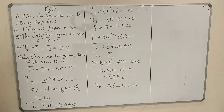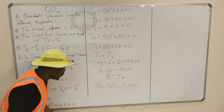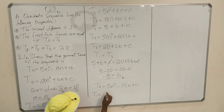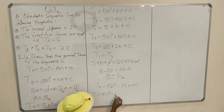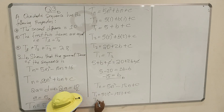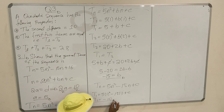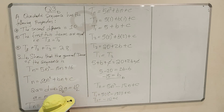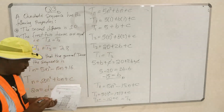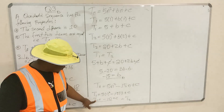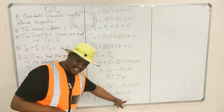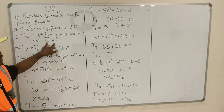What does the next property tell you? T₁ + T₂ + T₃ = 28. We know the first term. T₁ = 5(1)² minus 15(1) + C = 5 minus 15 + C = minus 10 + C. I would say this is the same as term number 2, because the first two terms are equal. So T₁ = T₂ = minus 10 + C.